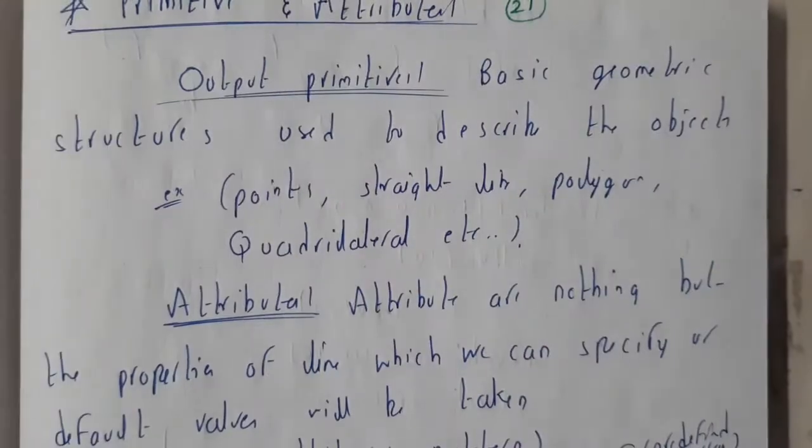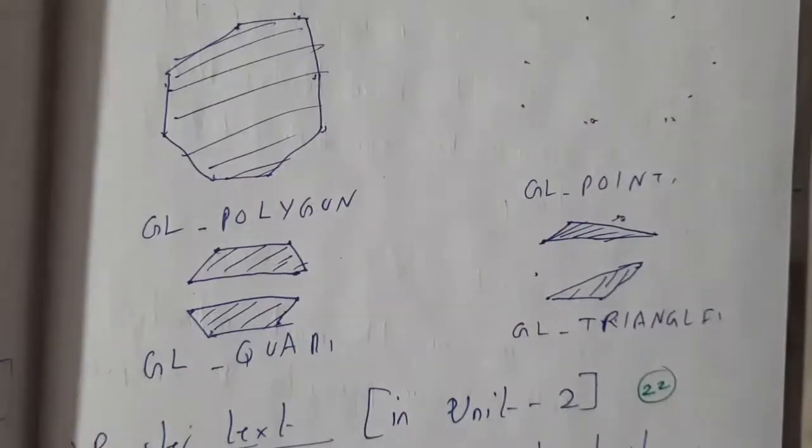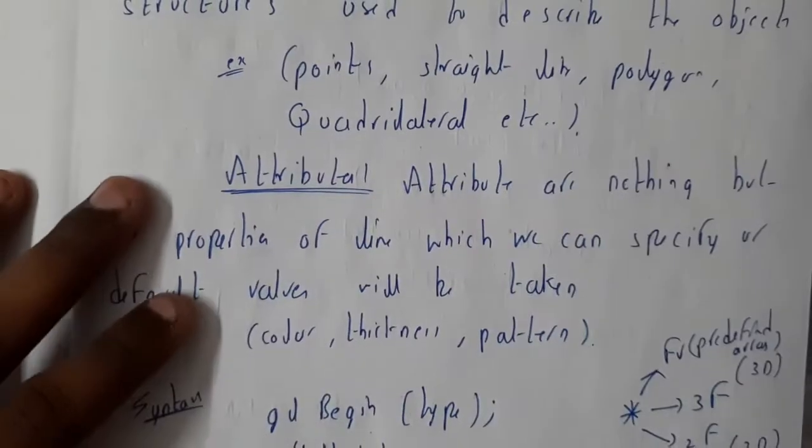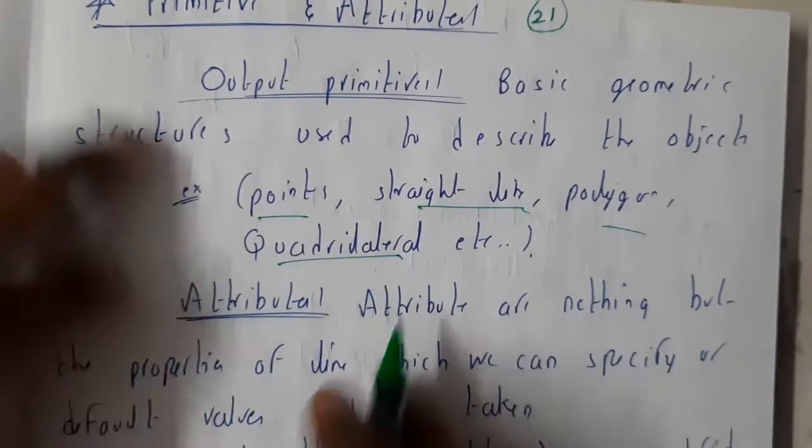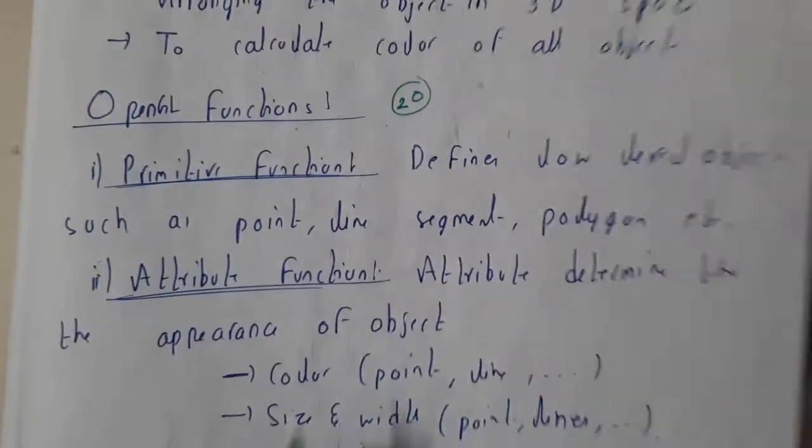If you want a small example, I will be showing you what primitives are. Just give me a second. The primitives are nothing but shapes like points, circles, lines, quadrilaterals.